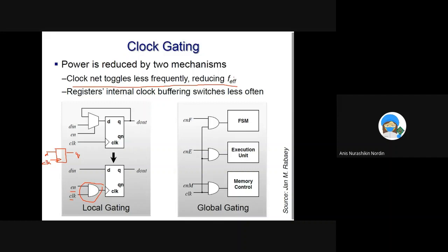It will only switch when the enable is turned on, so this clock net toggles less frequently and you have a lower frequency which is known as effective frequency. This will cause the registers internal clock to switch less often.